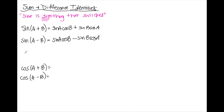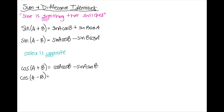For cosine, the mnemonic is 'cosine is opposite.' Rather than a plus going with a plus like in sine, there's a minus in the middle. And rather than starting with sine, these start with cosine and the trig functions stay the same — no switching. So: cos(A+B) = cosA cosB − sinA sinB, and cos(A−B) = cosA cosB + sinA sinB. The sign in the middle flips — that's what 'opposite' means.